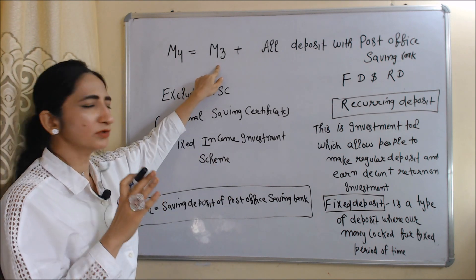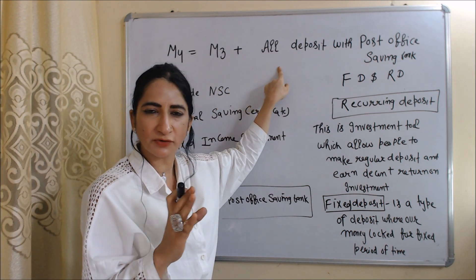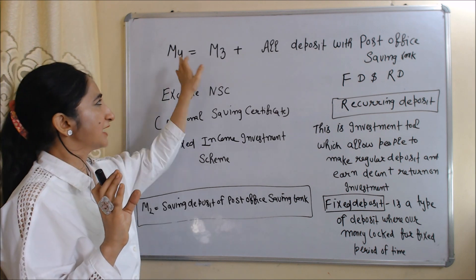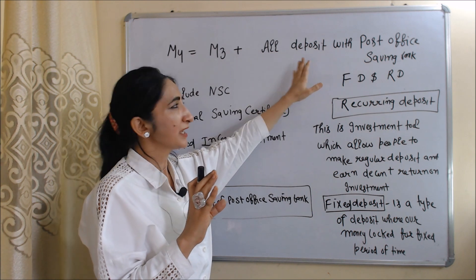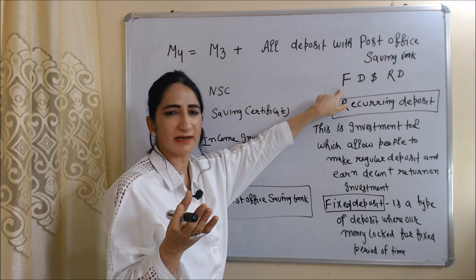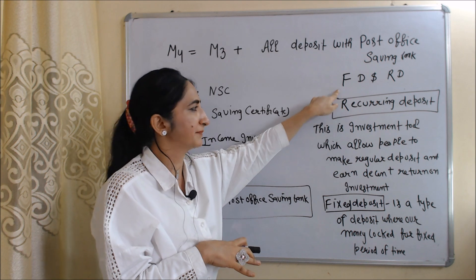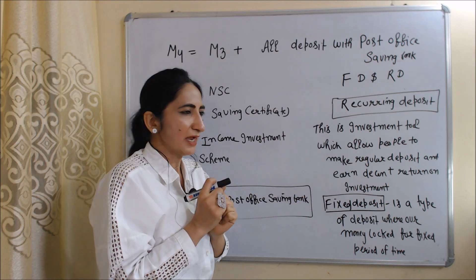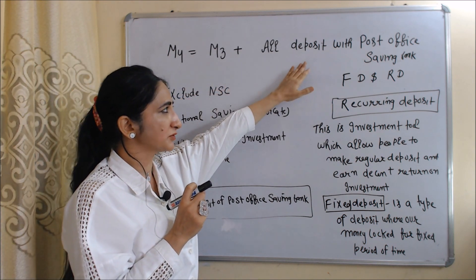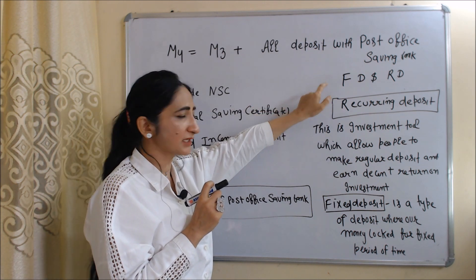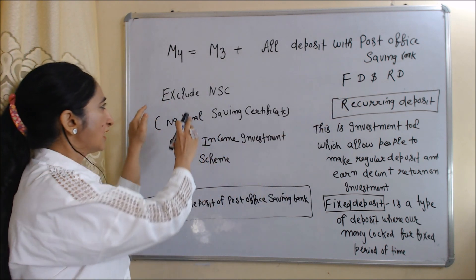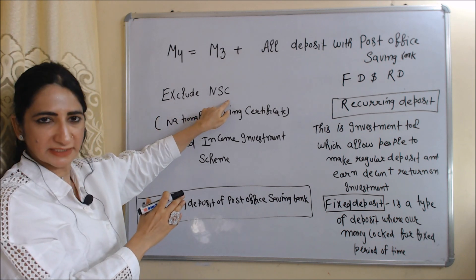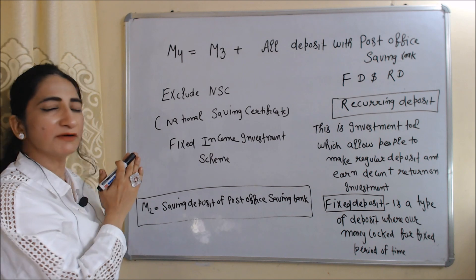M4 includes all components of M3 plus all deposits with the post office savings bank. Don't confuse with M2 — M2 only includes saving deposits of post office, but M4 includes all deposits with the post office savings bank, which mainly include FD and RD. FD is fixed deposit where money is locked for a fixed time period, and RD is recurring deposit which allows people to make regular deposits and earn a decent interest rate. M4 excludes NSC — national savings certificate, which is a fixed income investment scheme.